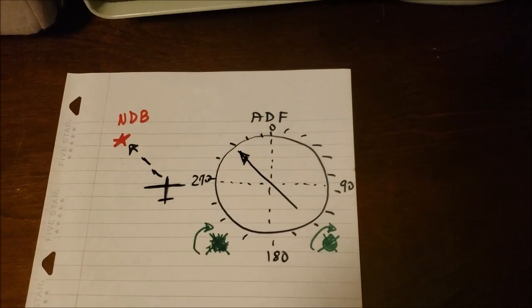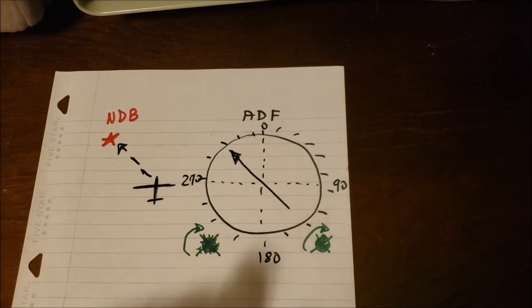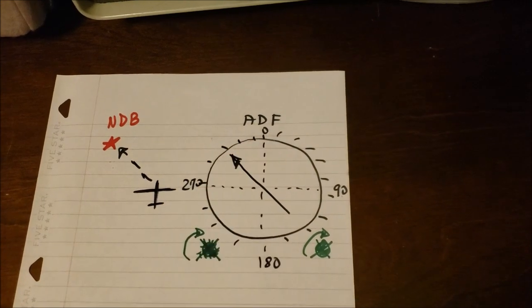NDBs have been used since the 1930s, and in airplanes they're received using an automatic direction finder, or ADF.